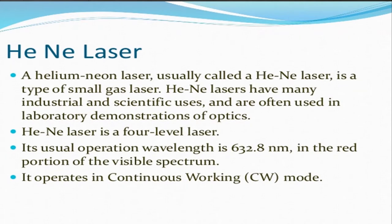A helium neon laser is a type of small gas laser. These lasers have many industrial and scientific uses and are often used in laboratory demonstrations of optics. The helium neon laser is a four-level laser, with a usual operating wavelength of 632.8 nanometers in the red portion of the visible spectrum. It operates in continuous working mode, also referred to as CW mode.